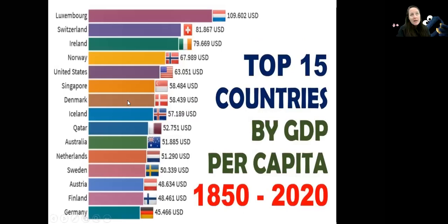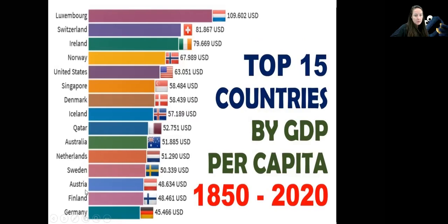These are the top 15 countries based on production relative to their population. All these other countries are pretty small: Luxembourg, Switzerland, Ireland, Norway, Singapore, Denmark, Iceland, Qatar, Netherlands, Sweden, Austria, Finland, and Germany — all very small compared to the United States. So I think based on our large population, that's pretty impressive.